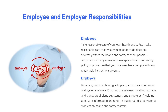Employers are responsible for providing and maintaining safe plant, structures, equipment and systems of work. This includes ensuring the safe use, handling, storage and transport of plant, substances and structures. Employers must also provide adequate information, training, instruction and supervision to workers on health and safety matters.